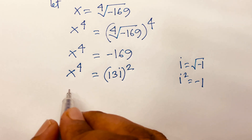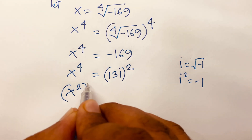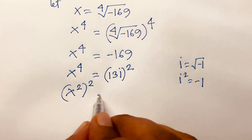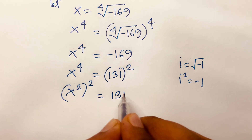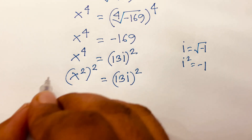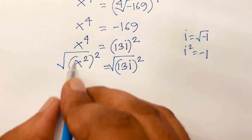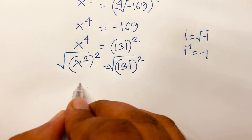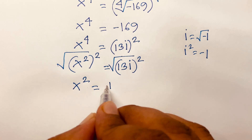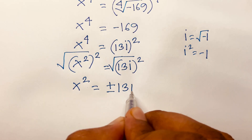Then this equation becomes x squared, bracket to the power 2, and 2 times 2 equals 4, is equal to 13i bracket to the power 2. Then I use the square root on both sides. The square roots cancel, so x squared is equal to plus or minus 13i.